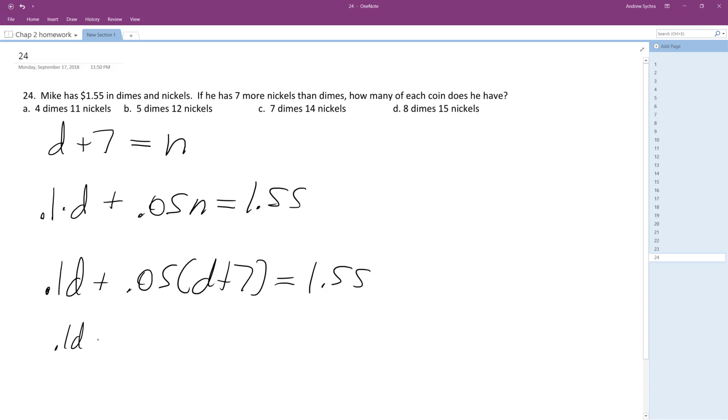So 0.1d plus 0.05d plus 0.35 is equal to $1.55.